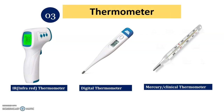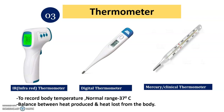These are the different thermometers. The first is the IR thermometer, the second is the digital thermometer, and the third is the mercury thermometer. The IR thermometer became widely used after the COVID situation. The digital thermometer shows readings in digit format. The mercury thermometer shows the mercury level after inserting it below the tongue. With all these thermometers, we can record body temperature. The normal body temperature is 37 degrees Celsius or 98.6 degrees Fahrenheit, which reflects the balance between heat produced and heat lost.